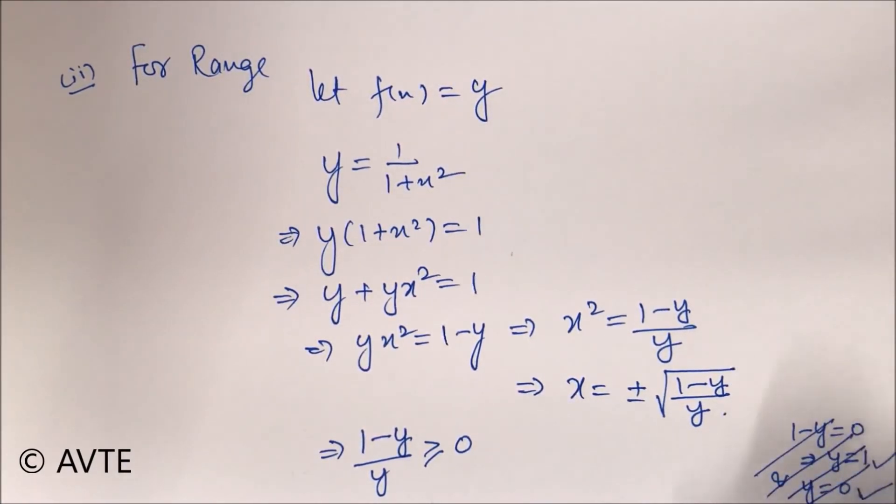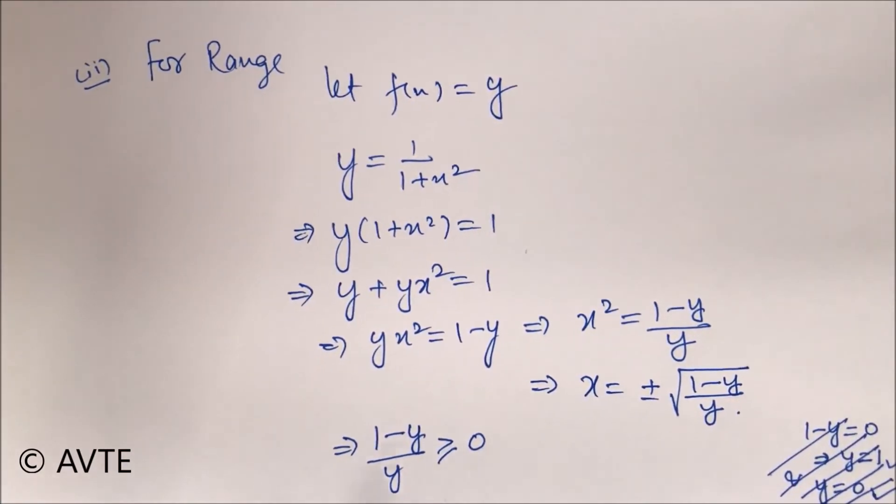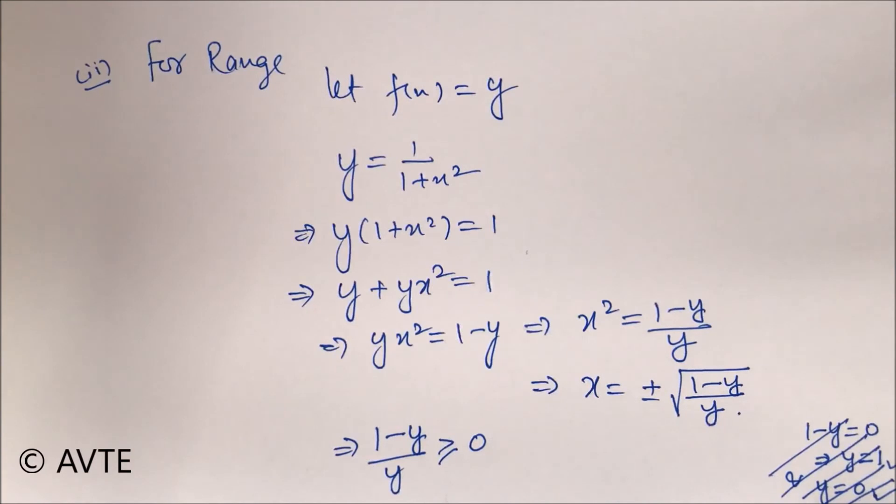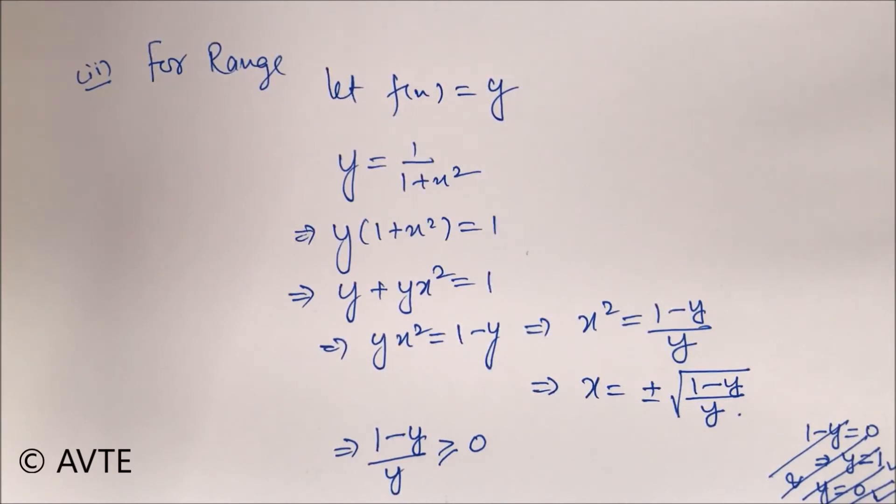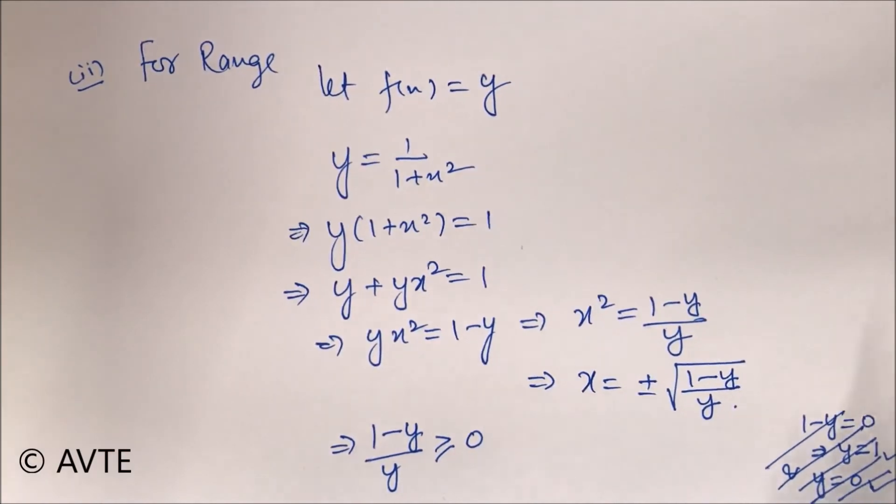But try to do it orally. Well, because y is in the denominator, so we have two critical points 1 and 0. 1 can participate because if you put y is equal to 1, it is 1 minus 1 upon 1 and that is 0. But if you put y is equal to 0, it will turn everything to infinity. So we have two critical points. 1 will participate but 0 will be taken as the open interval.